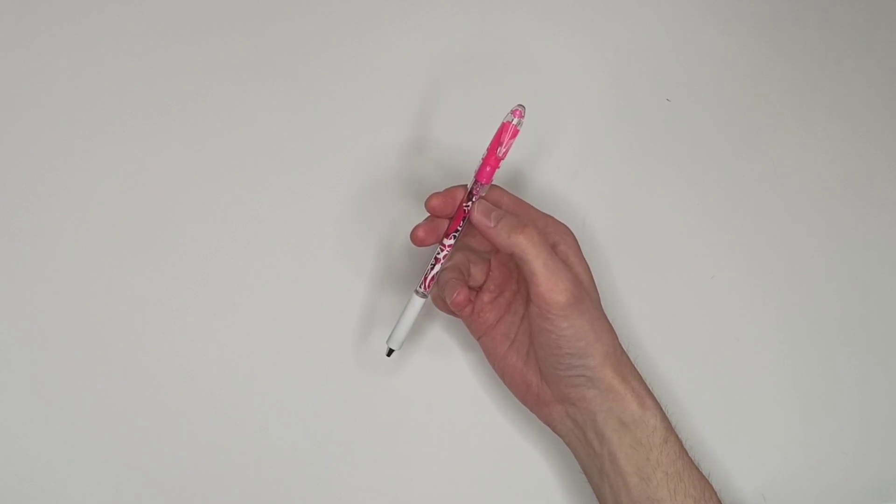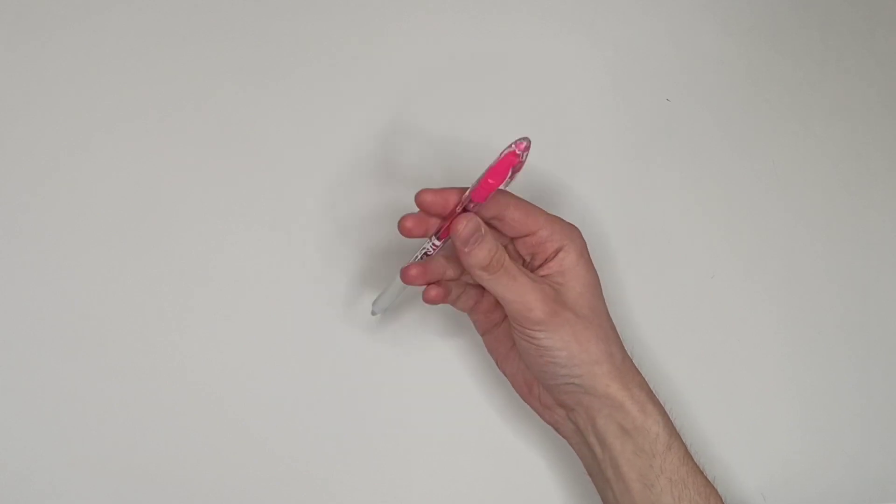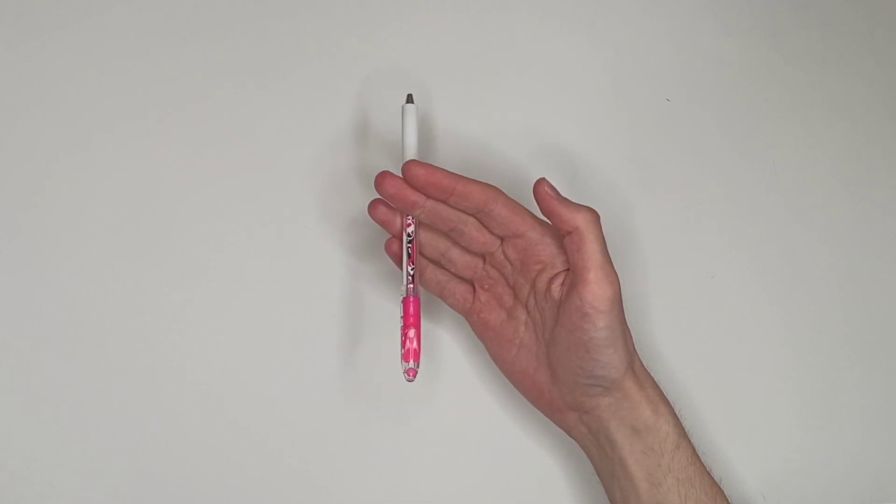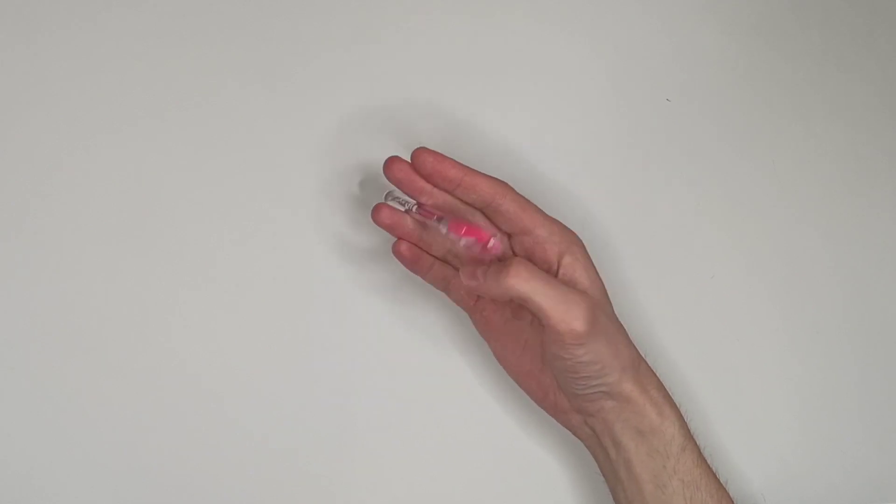The trick consists of three simple steps. The first one is letting the pen swing down, let it fall and hold it with your ring and middle finger.